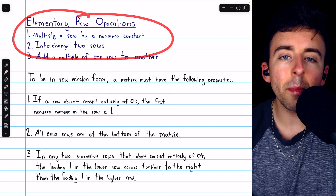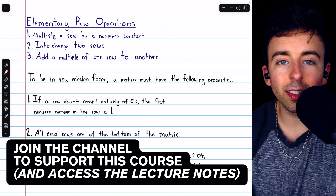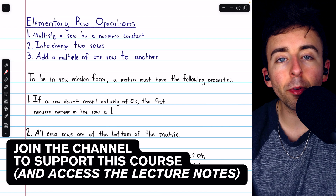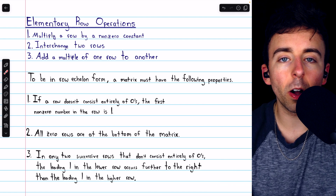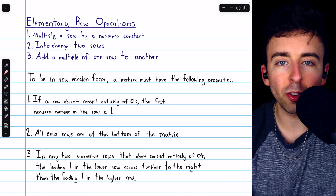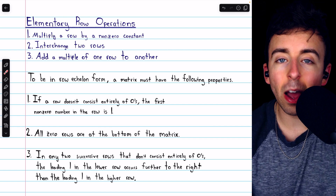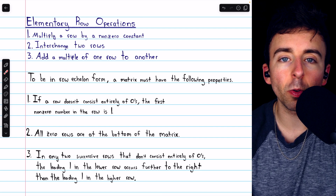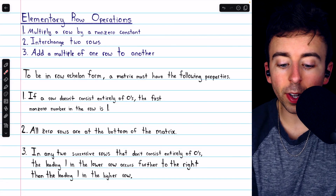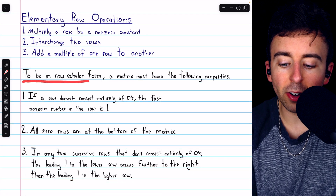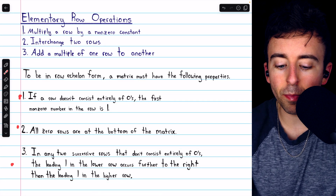These are the three elementary row operations, and these operations can be performed on a matrix to get it into what's called row echelon form. Throughout this course, there will be countless times we need to put a matrix into row echelon form. For a matrix to be in row echelon form, it must have these three properties.